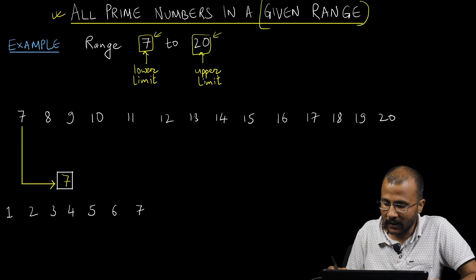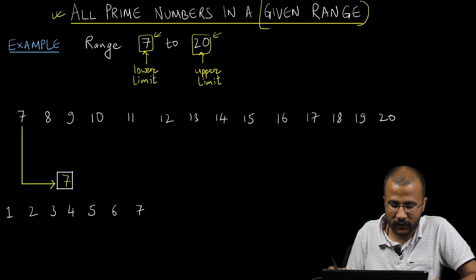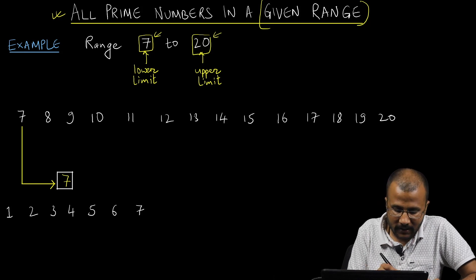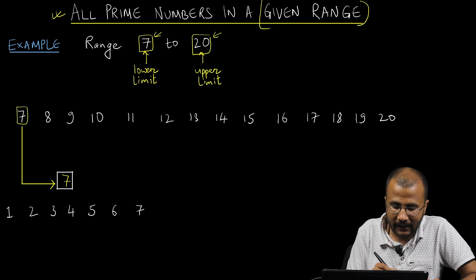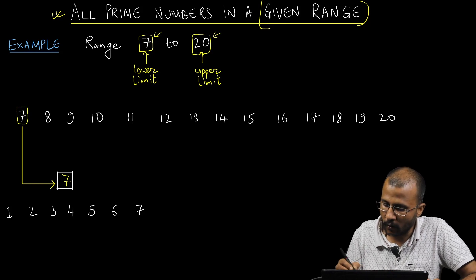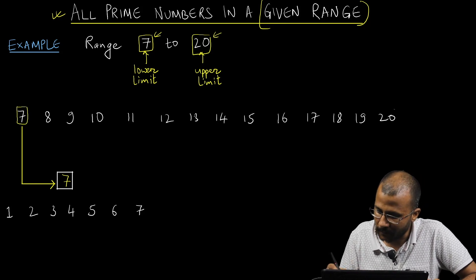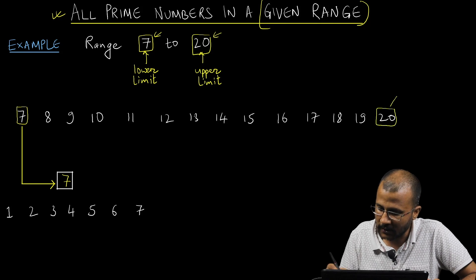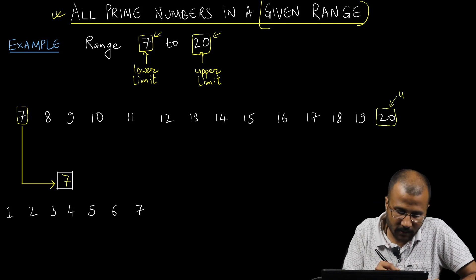Let us list down all the numbers from 7 to 20 here first. This is the lower limit L — 7, then 8, then 9 — I keep on writing all these numbers up to 20, which is my upper limit U.